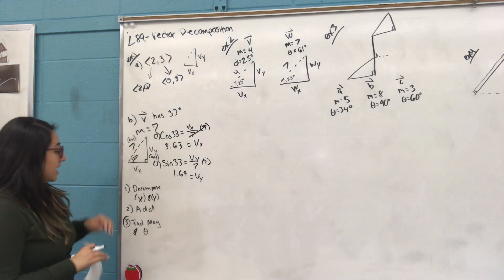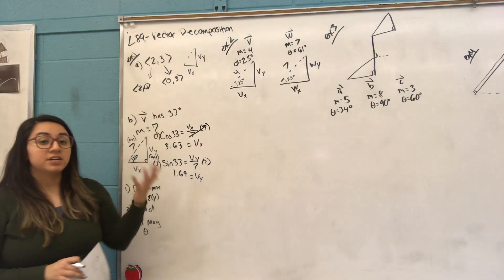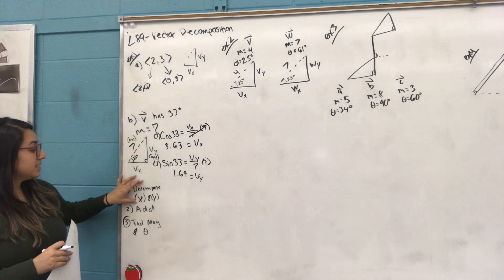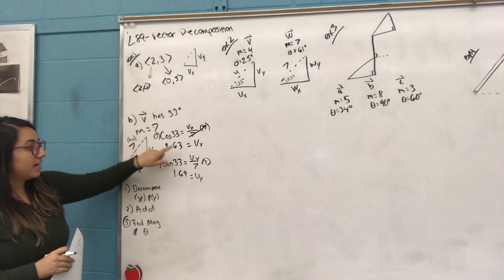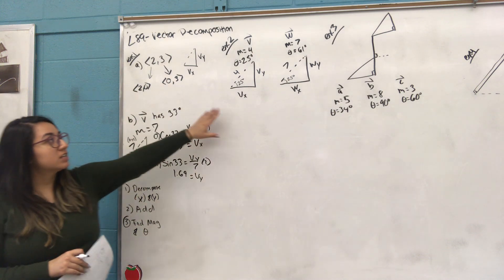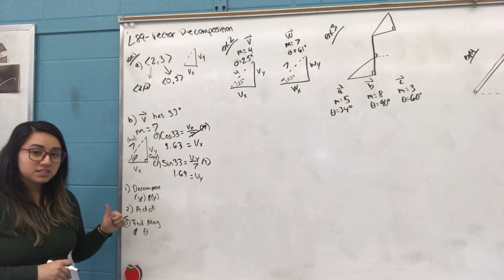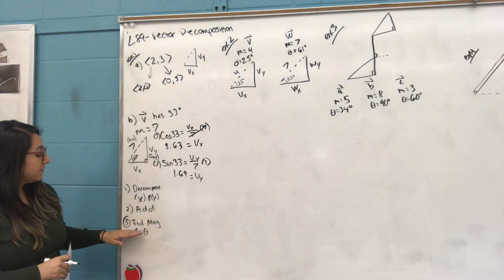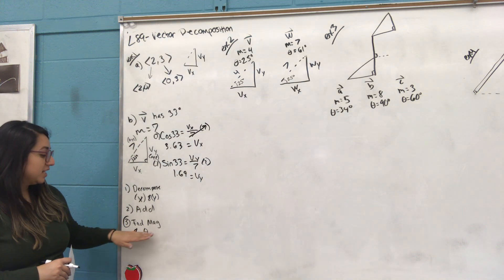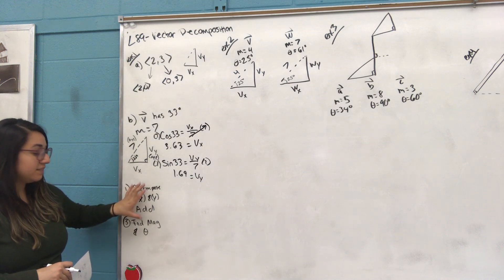We're going to do a couple of examples where we find X and Y for different vectors and then combine them. The steps are: first decompose (find X and Y for each vector, just like in step B), then add all the X's together and add all the Y's together, and finally create a new triangle to find a new magnitude and a new degree. Make sure you have these steps written down or screenshotted.